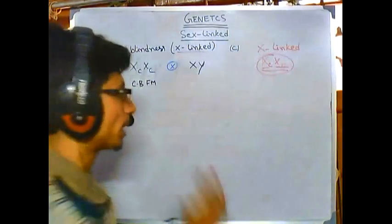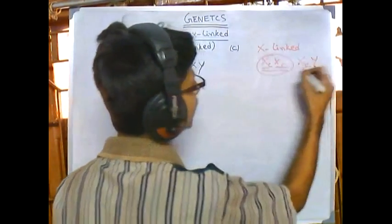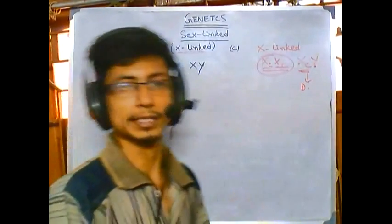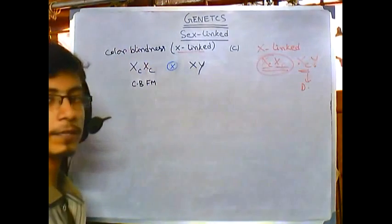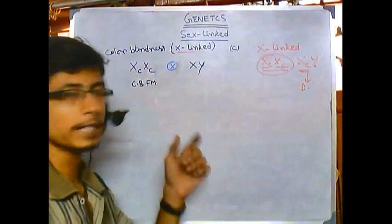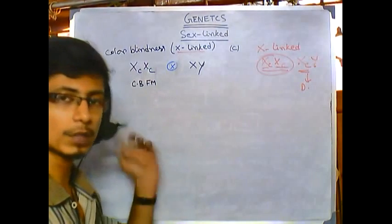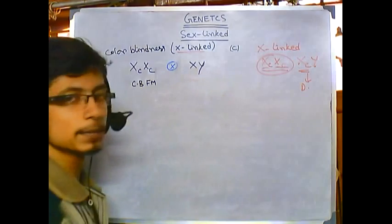But in case of X-linked inheritance, if a boy is having one faulty gene only, it can develop the disease because it is having only one X gene. This is the most important concept. Knowing that when they told us that the mother is colorblind, that means mother is carrying this colorblind C gene in both of her X chromosomes. And his father is healthy, that means nothing is wrong - his father is completely healthy, so no faulty gene in the father.